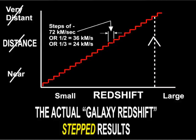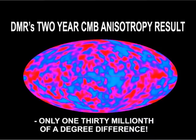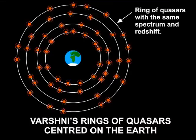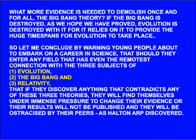In summary: Halton Arp showed that redshift was not related to galaxies moving away from us. Tift showed that redshift was emitted in steps and was not continuous. The low temperature of the background radiation was so uniform that it could not explain how stars or galaxies could have formed from the initial Big Bang. And finally, Varshni showed that quasars were in bands of similar spectra centered on the earth. What more evidence is needed to demolish once and for all the Big Bang theory?